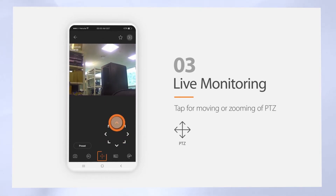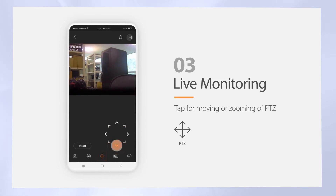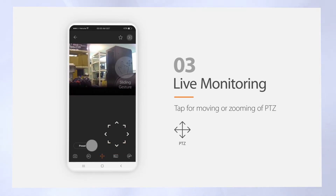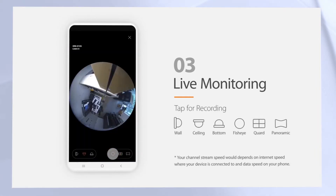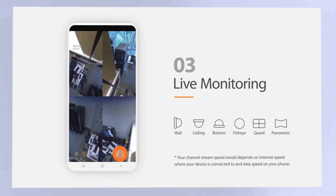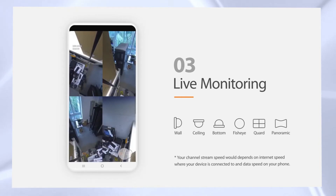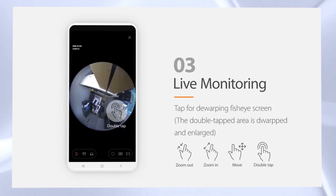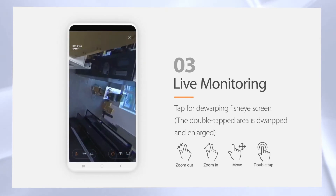If the camera is a PTZ camera, the controls are shown and you can change the view angle by sliding your finger on the screen or touching the direction icons on the bottom of the screen. Fish-eye cameras can be dewarped into quad and panoramic images. You can pinch and zoom or double tap on individual quadrants to move around.